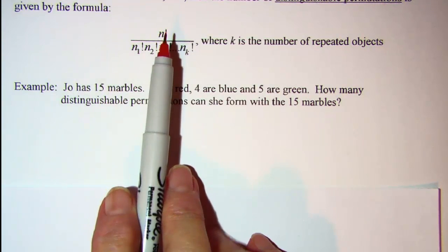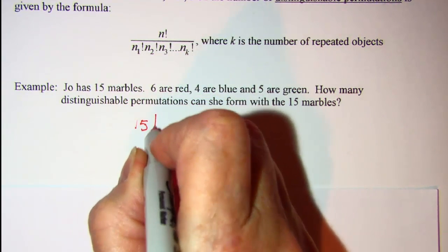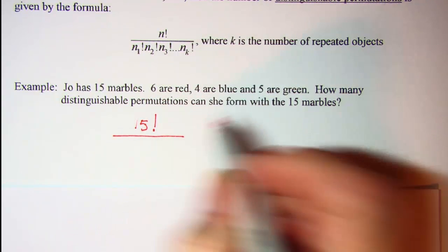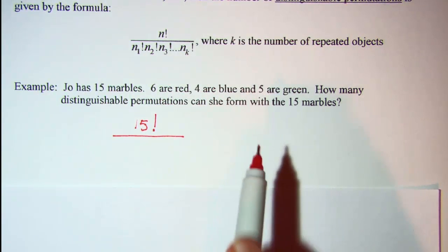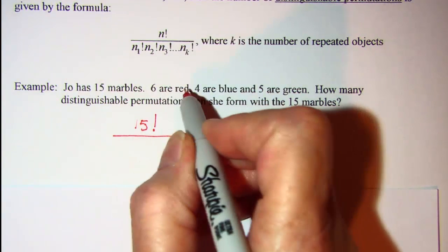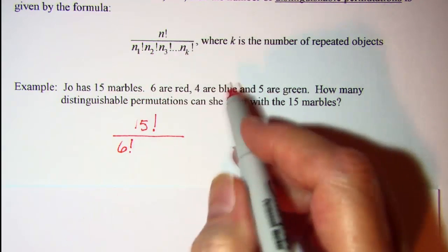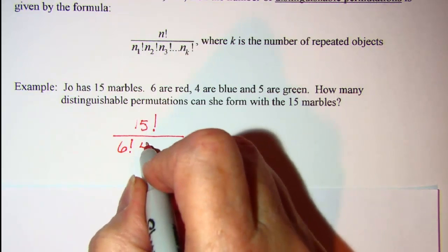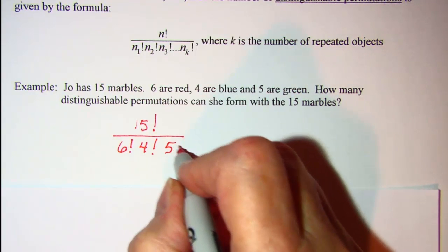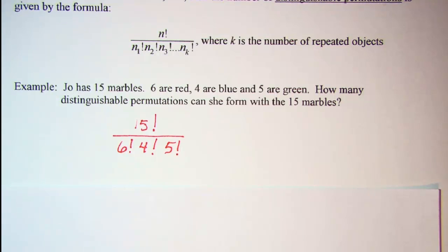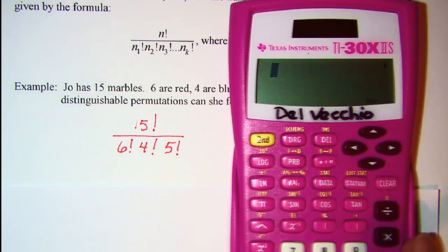So our numerator is going to be 15 factorial, and then we need to divide out to take care of the repetitions so that we don't count them more than once. So 6 are red, that's 6 factorial, 4 are blue, that's 4 factorial, and 5 are green, that's 5 factorial.